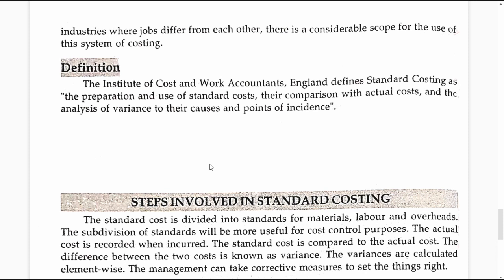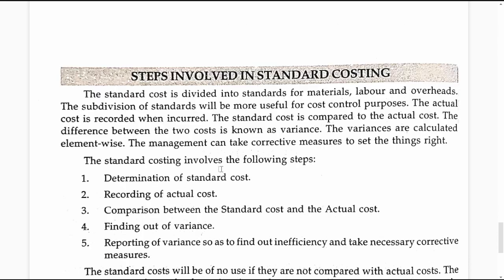It involves primarily three activities: first, determination of standard cost before the actual activity is carried out; second, after the actual activity is carried out, the cost involved is measured — that is the actual cost; and third, analyzing and understanding the causes for variances between the actual cost and the standard cost.